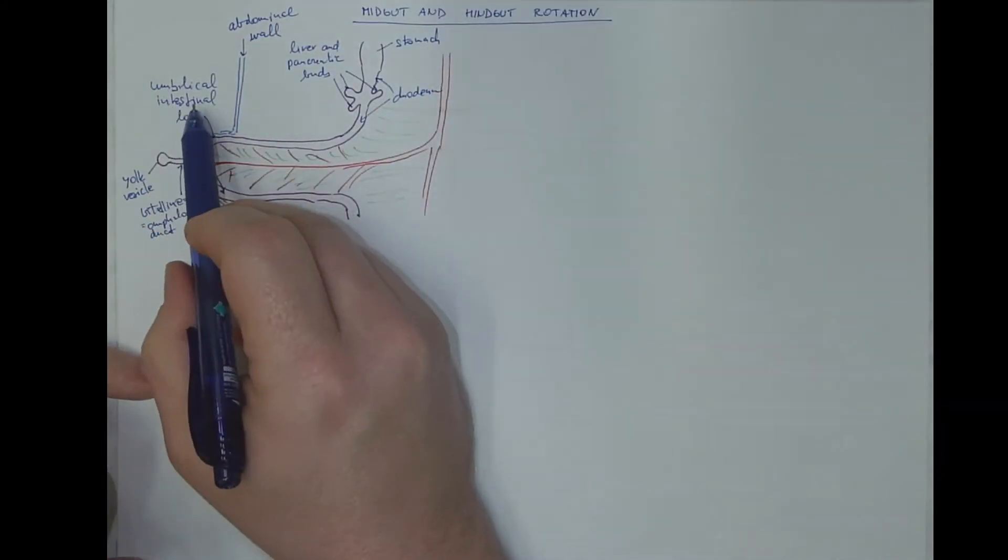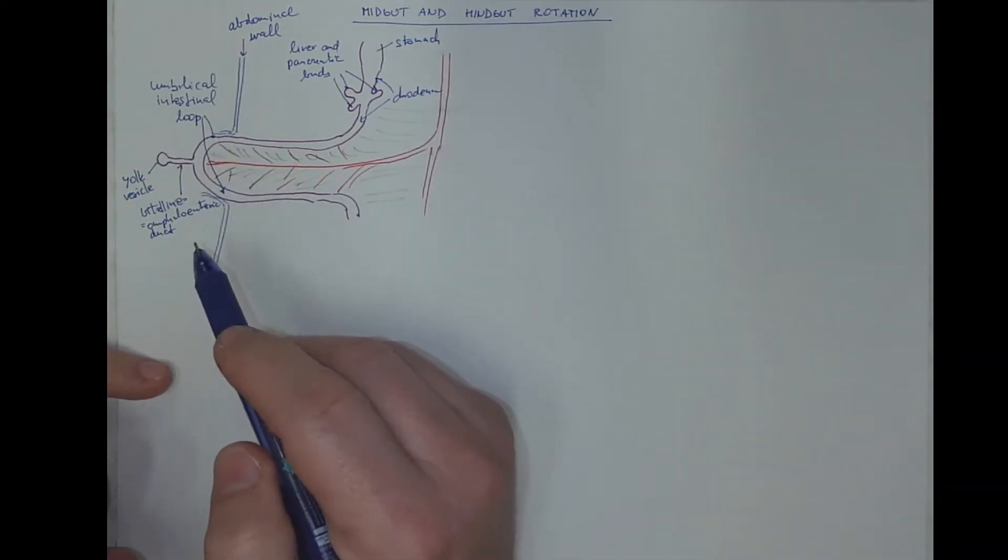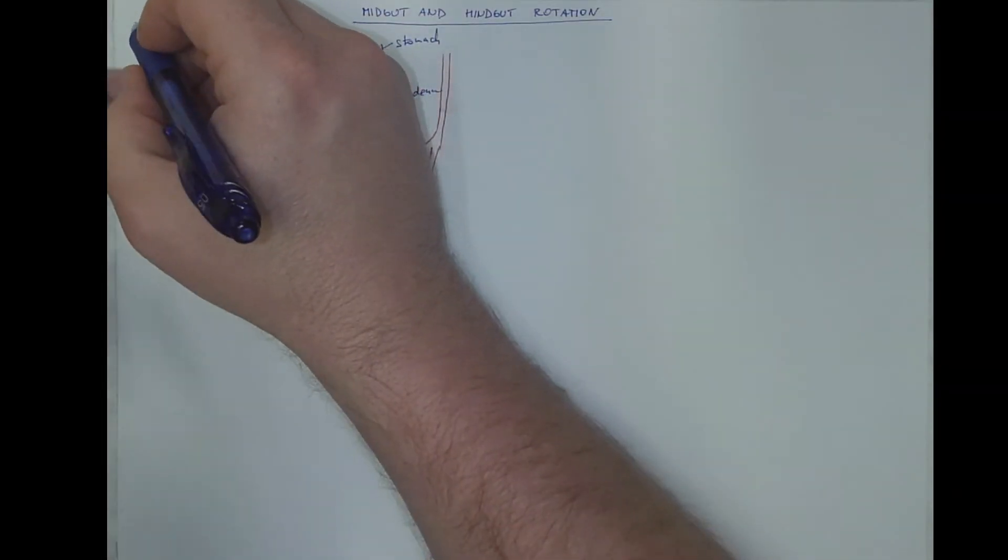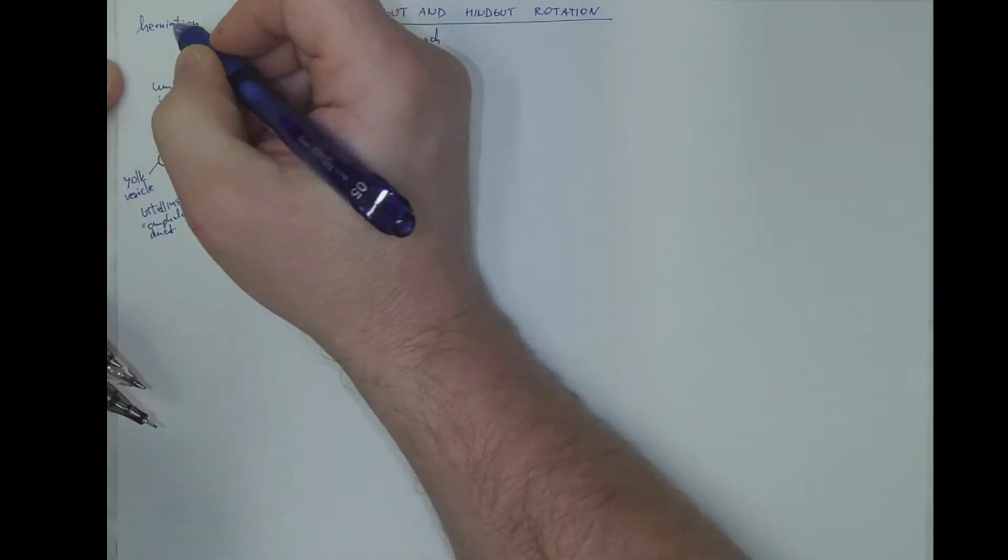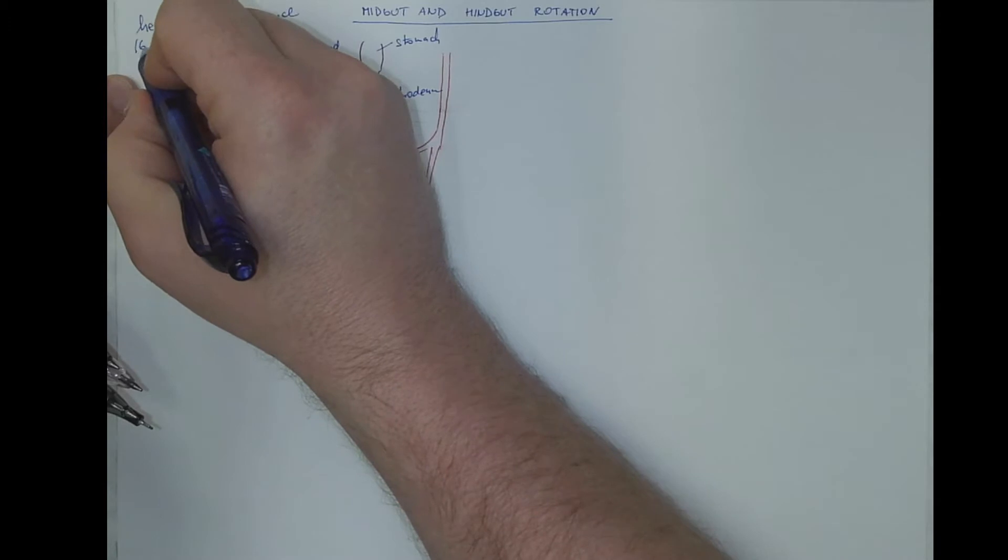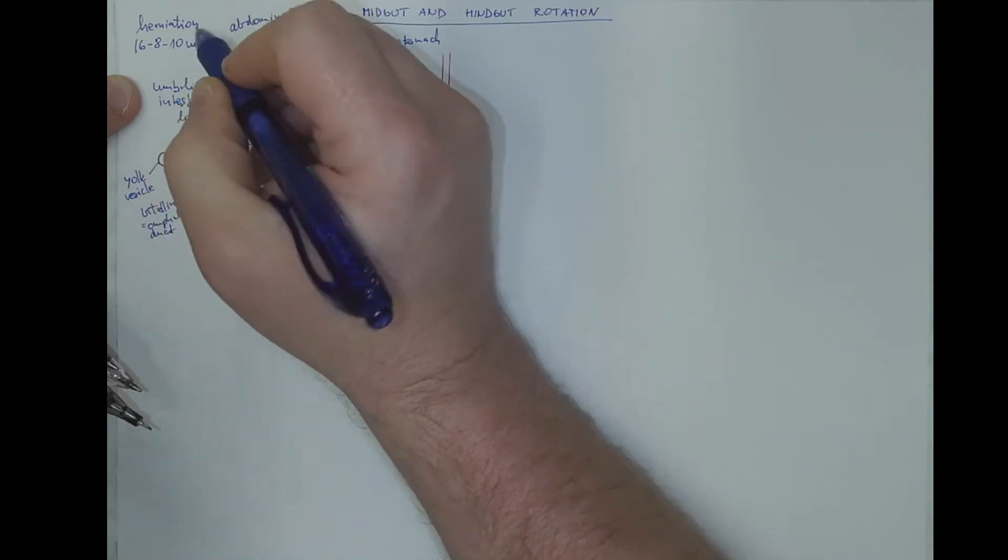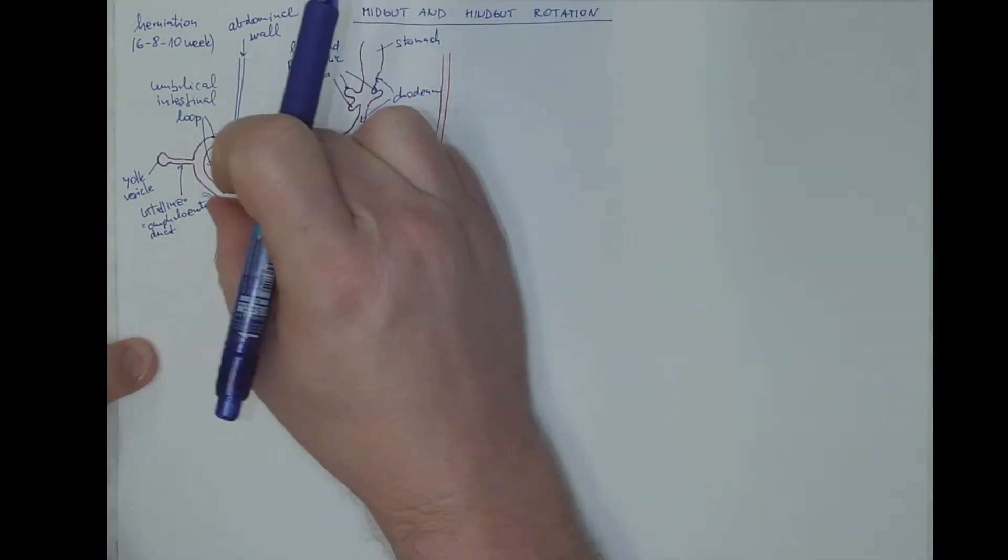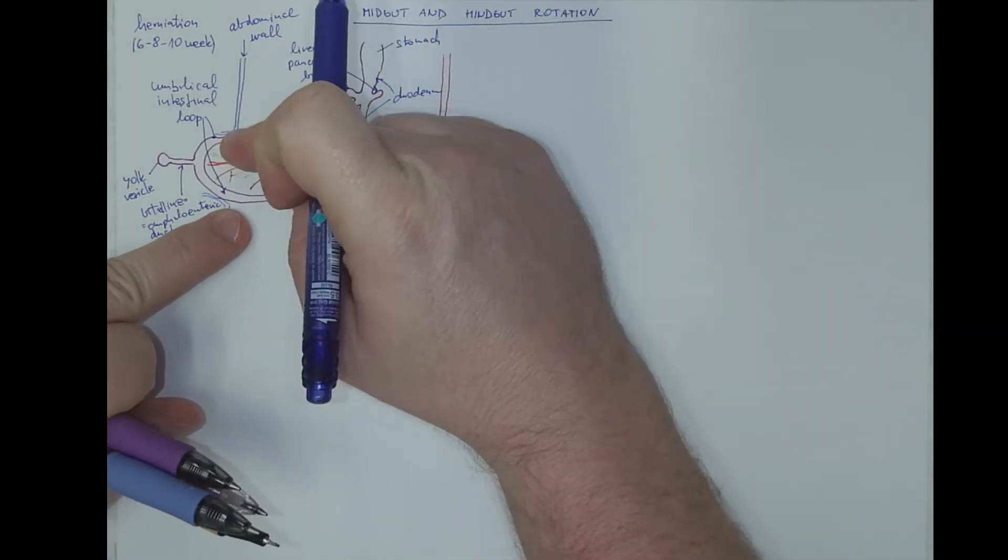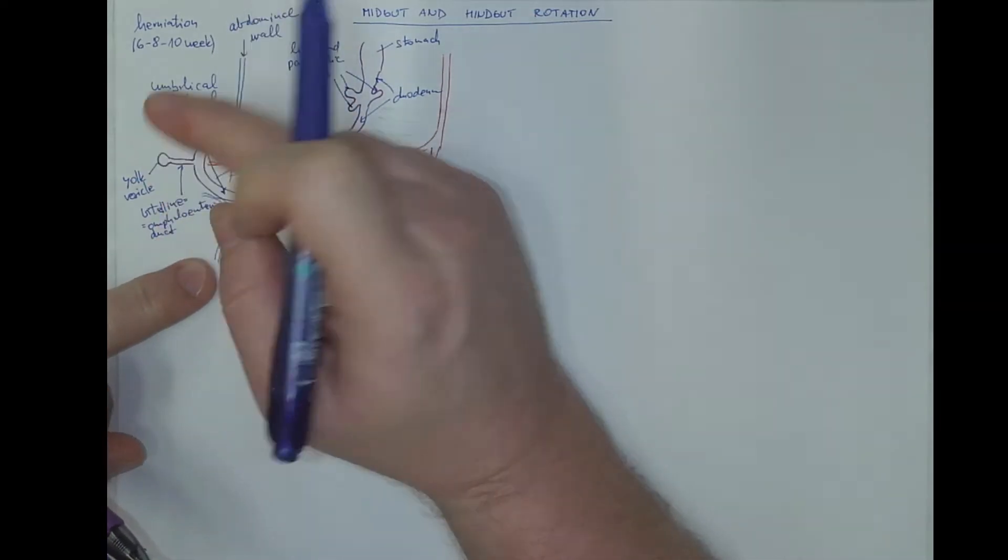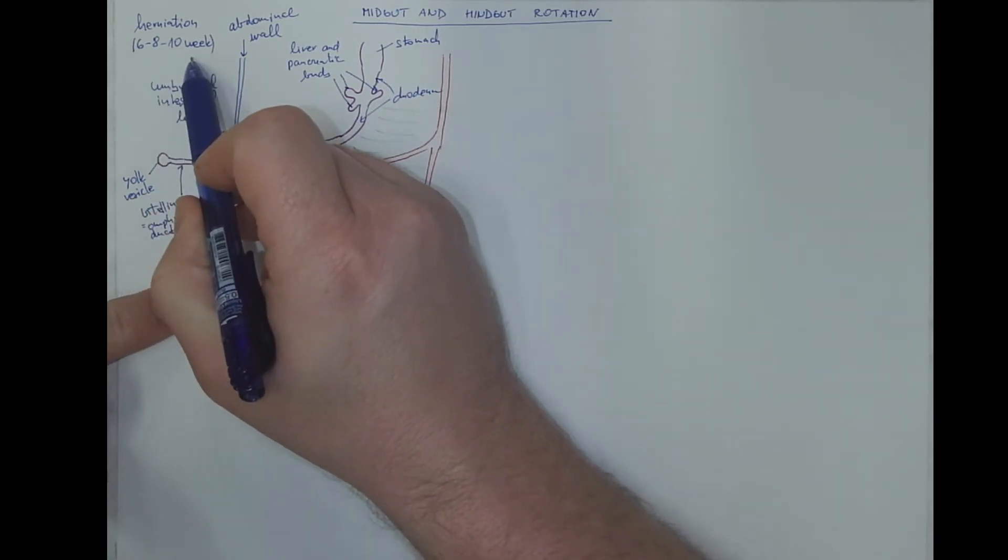So the presence of the umbilical intestinal loop inside the umbilicus, outside the body, is called the umbilical herniation. And it's perfectly normal to have it between the 6th, 8th or 10th week. But by the end of the 10th week, it should be retracted back into the abdominal cavity. Should it be trapped outside, the umbilicus would be closing and the loops would remain outside. That would be pathology. But in this time, it's normal, it's physiological.